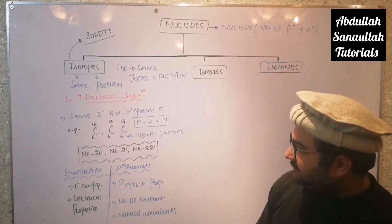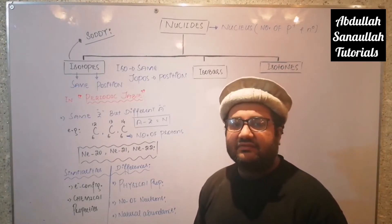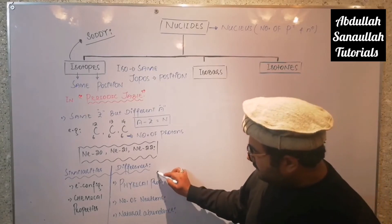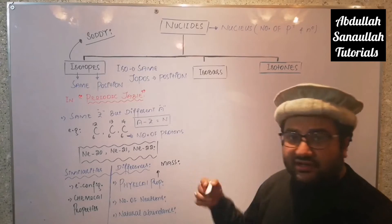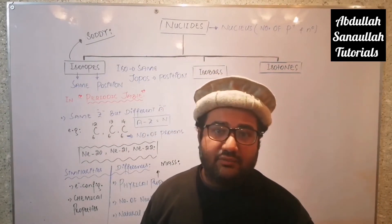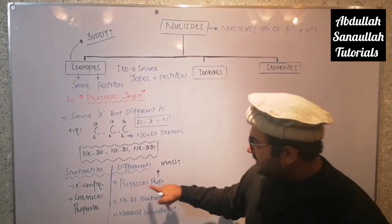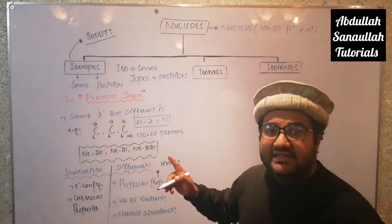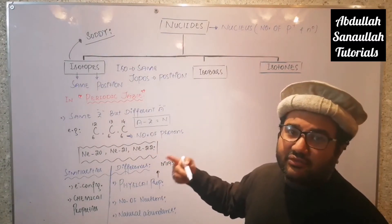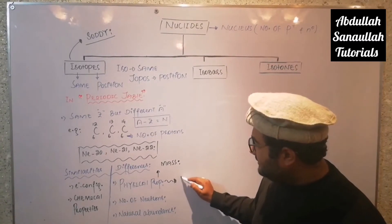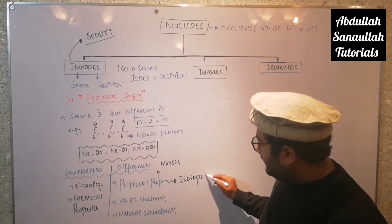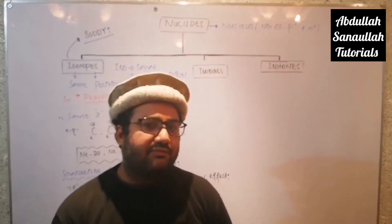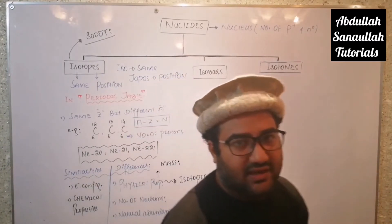What are the differences between isotopes? The first difference is in physical properties, especially those related to mass — such as melting point, boiling point, and density. Since these properties depend on mass, they will differ among isotopes. The difference in those physical properties which depend on mass is called the isotopic effect. The isotopic effect has many important applications which are beyond the scope of this lecture.